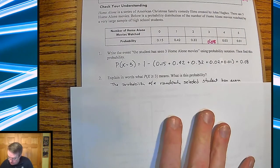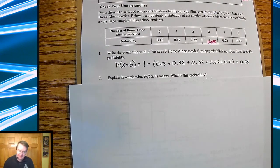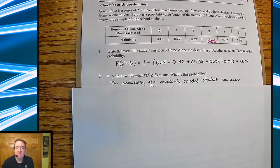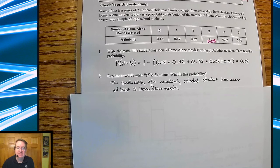Question number two, explain in words what P(X > 3) means, and find the probability. Remember when you're talking probabilities, phrasing is important. In this case, the probability of a randomly selected student having seen at least three Home Alone movies.